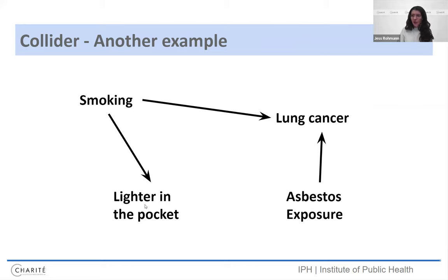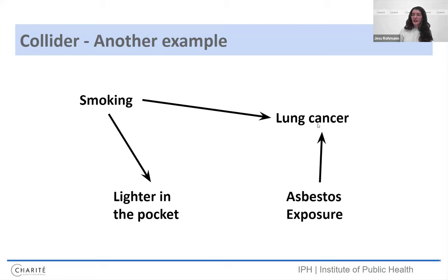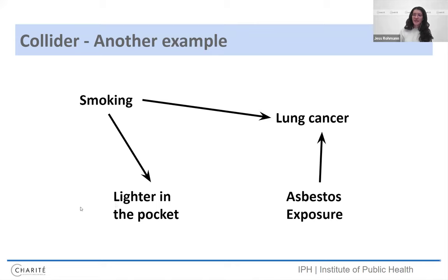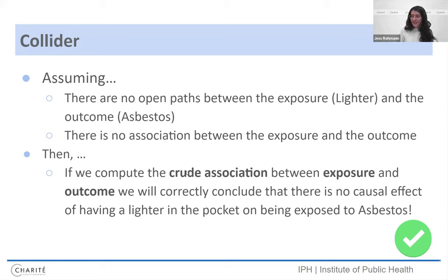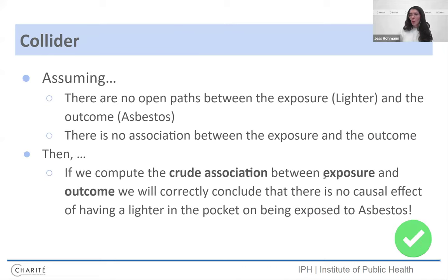Let's say this is our DAG. Smoking causes us to carry around a lighter in our pocket. Smoking also causes lung cancer. Asbestos causes lung cancer, but doesn't cause you to carry a lighter, nor is it related to smoking. So if we don't do anything in this DAG, we have a collider here at lung cancer. If we don't do anything and we're interested in the effect, let's say between the exposure, in this case, having a lighter in your pocket and the outcome being exposed to asbestos, we wouldn't expect seeing an association between those two variables. If we would compute something in our data set, these two variables aren't related at all. Here's the collider. There's no open backdoor path. We wouldn't see anything. What's the problem?